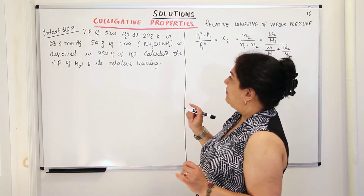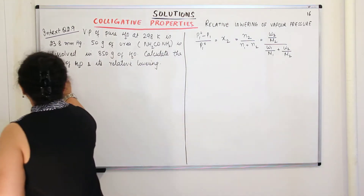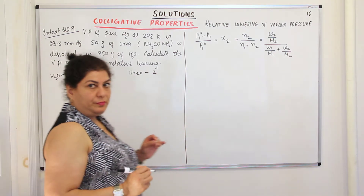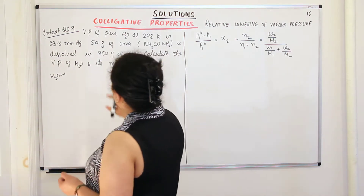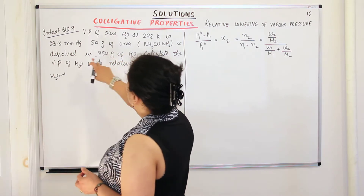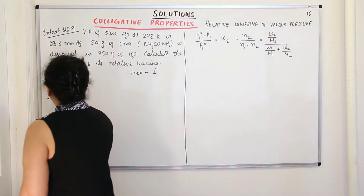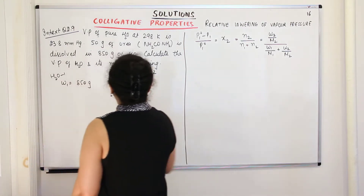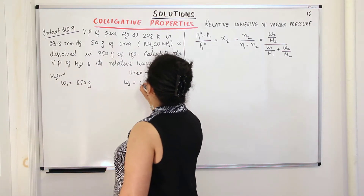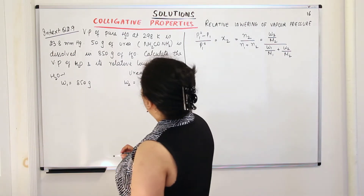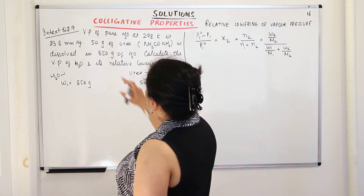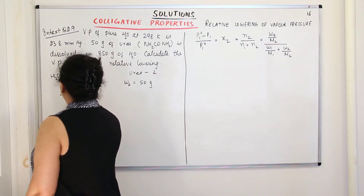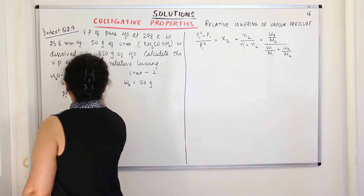Let us write down what is given. The vapor pressure of pure water at 298 Kelvin — water is the solvent, so water is component 1 and urea is component 2. The mass of water W1 is 850 grams and the mass of urea W2 is 50 grams. The vapor pressure of pure water, P1°, is 23.8 mmHg.